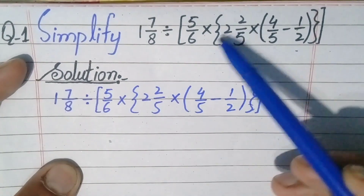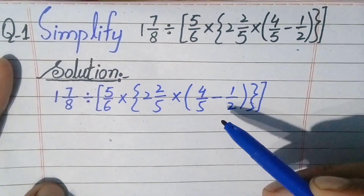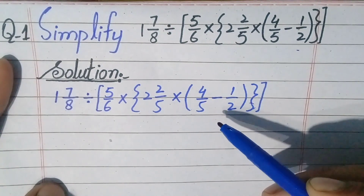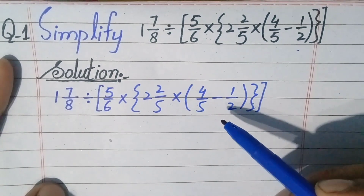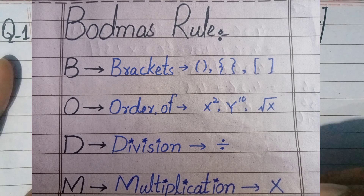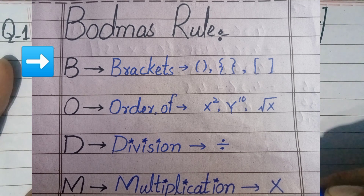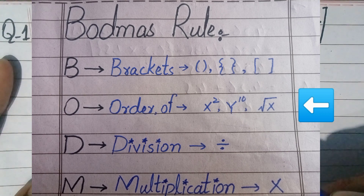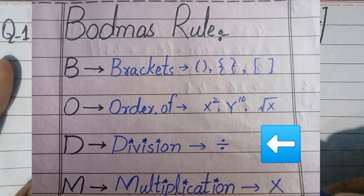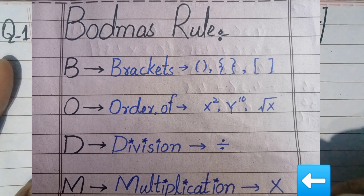Before starting, let's have a look at BODMAS rule — how we can use it and apply different operations in different orders. In BODMAS rule, the first letter B stands for Brackets, so in the first step we simplify the brackets inside the question. The second letter O stands for Order — in the second step we simplify orders, meaning exponents, powers, or square roots. The third letter D stands for Division.